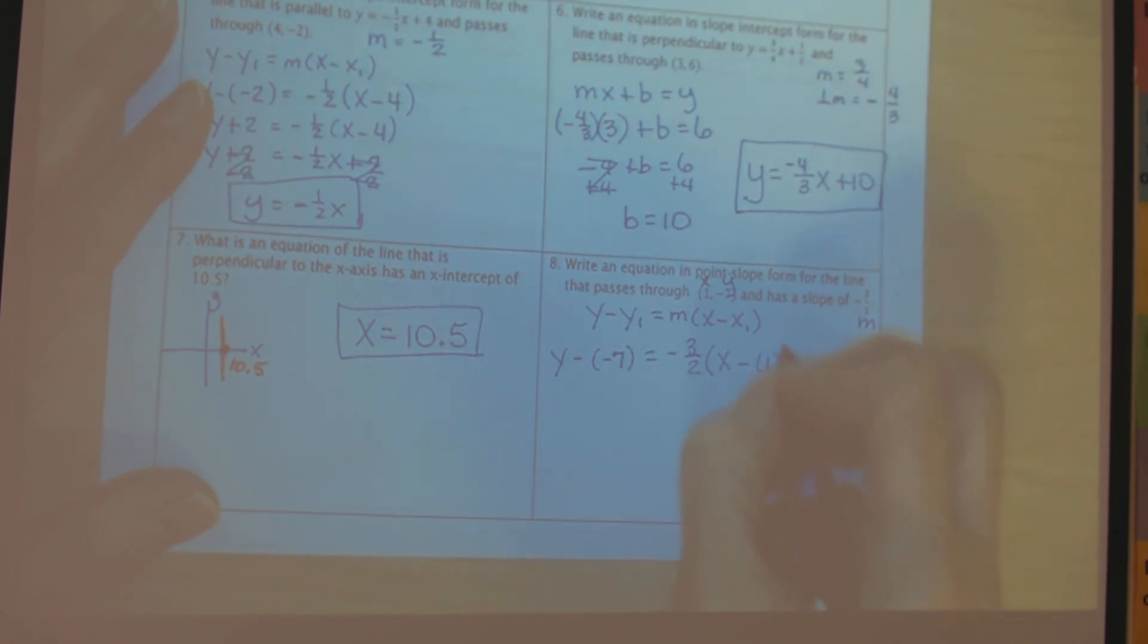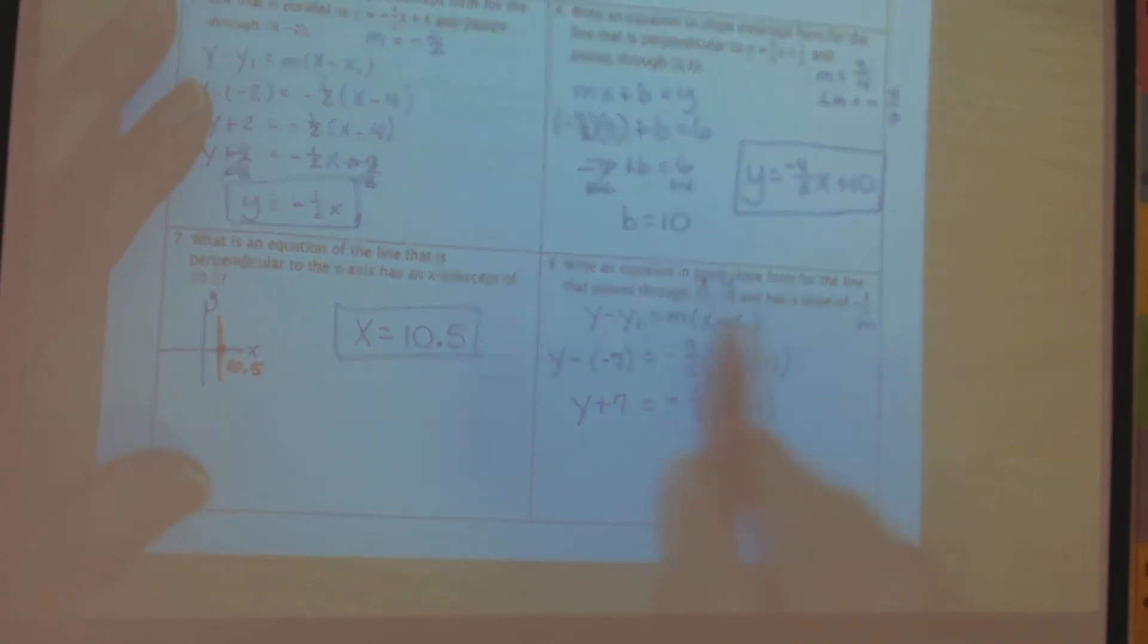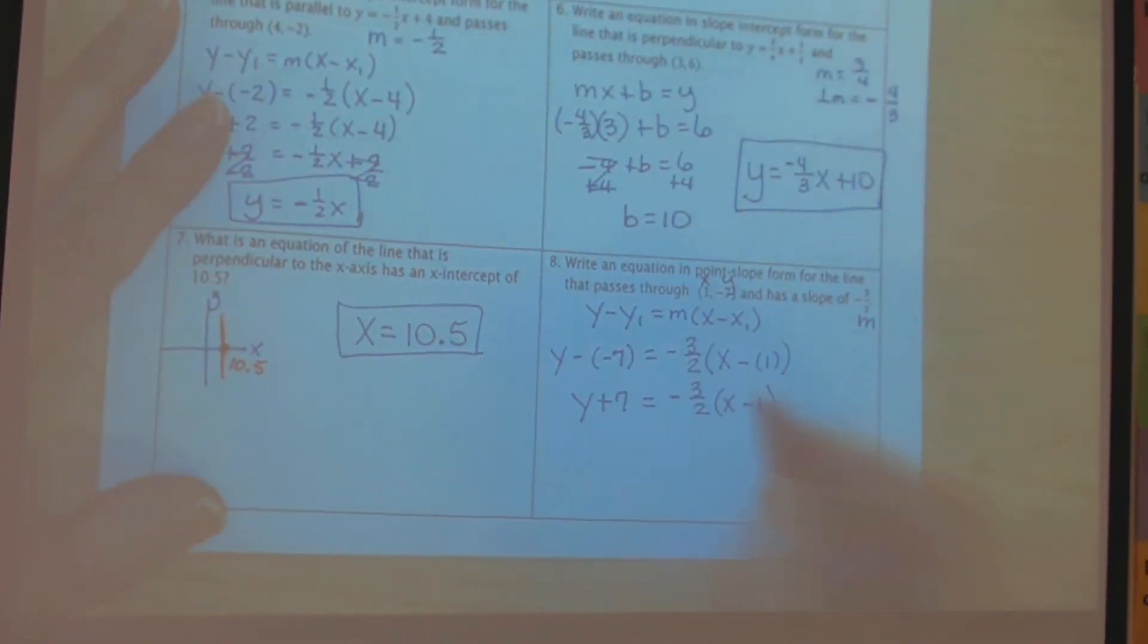And that's what we want. And then simplify. y plus 7 is going to equal negative 3 halves times x minus 1. Because they asked for it in point-slope form, we do not do anything else. This is as far as we need to go, and that one is in point-slope form.